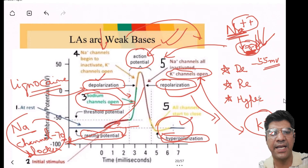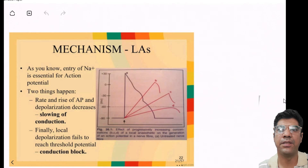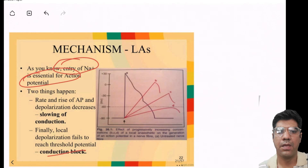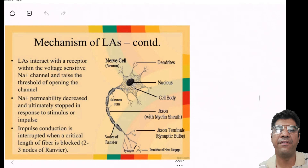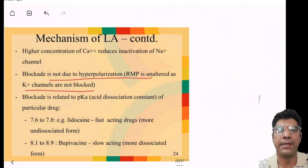Lignocaine's primary mode of action is to block voltage-gated sodium channels and slow down or inhibit the influx of sodium ions during depolarization. This interference with depolarization indirectly affects repolarization and makes it more difficult for neurons to initiate and propagate the action potential, resulting in temporary loss of sensation and pain relief in the area where lignocaine is applied.